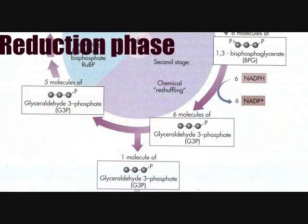Reduction phase. By losing inorganic phosphate ions and adding NADPH, the plant makes glyceraldehyde 3-phosphate. For the making of glucose, one of these G3P comes out, then recycling brings it back around.